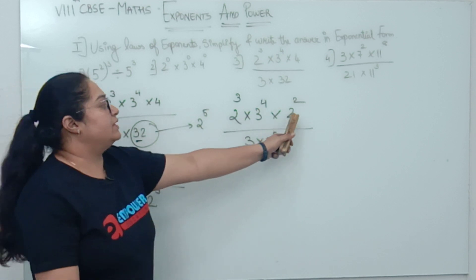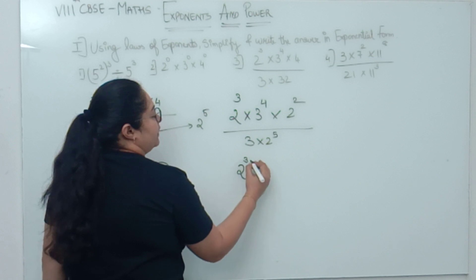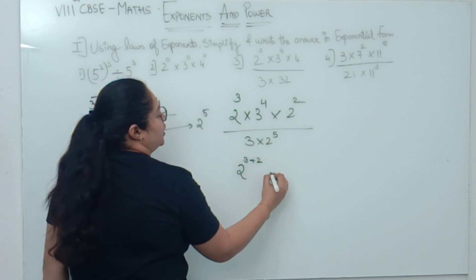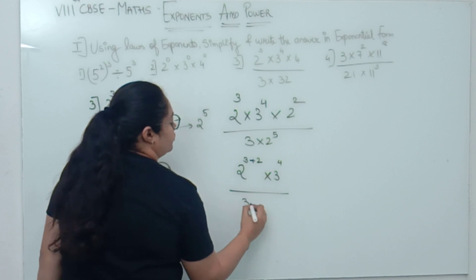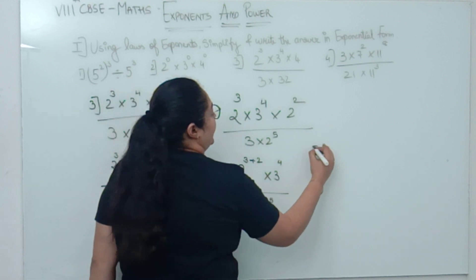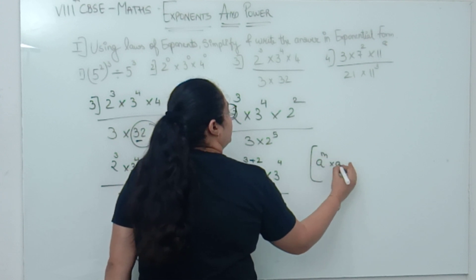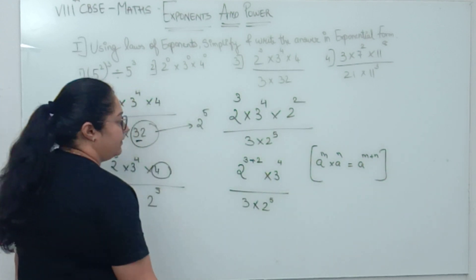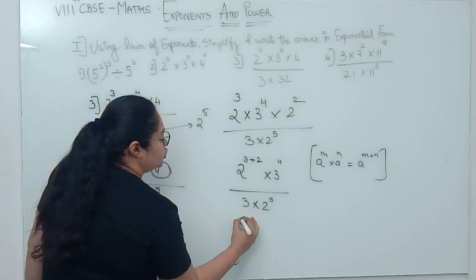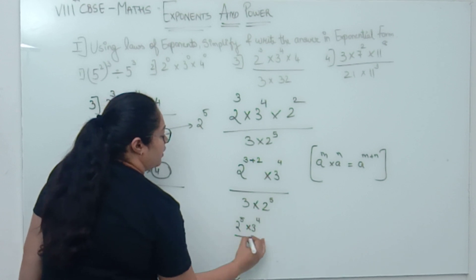2³ × 3⁴ × 2² upon 3 × 2⁵. Now the bases same are visible. Let us apply the first formula. 2 raised to 3 plus 2 × 3⁴ upon 3 × 2⁵. You will lose your marks if you don't write the laws. Okay? What will be the answer? 2⁵ × 3⁴ upon 2⁵ × 3.